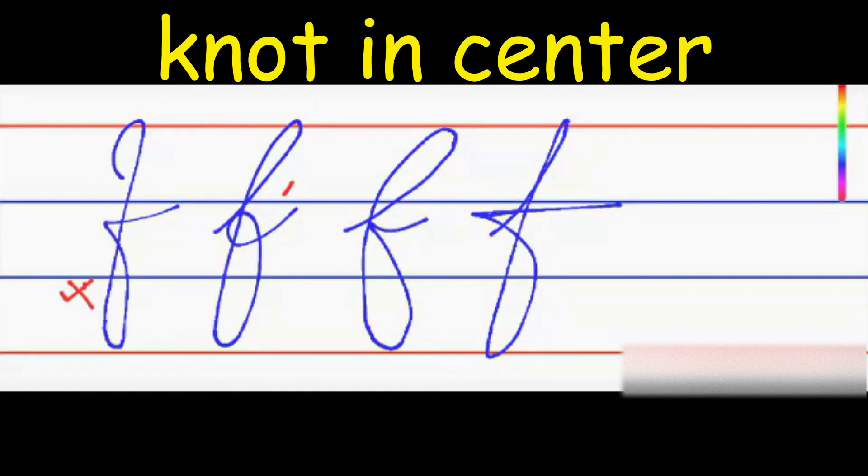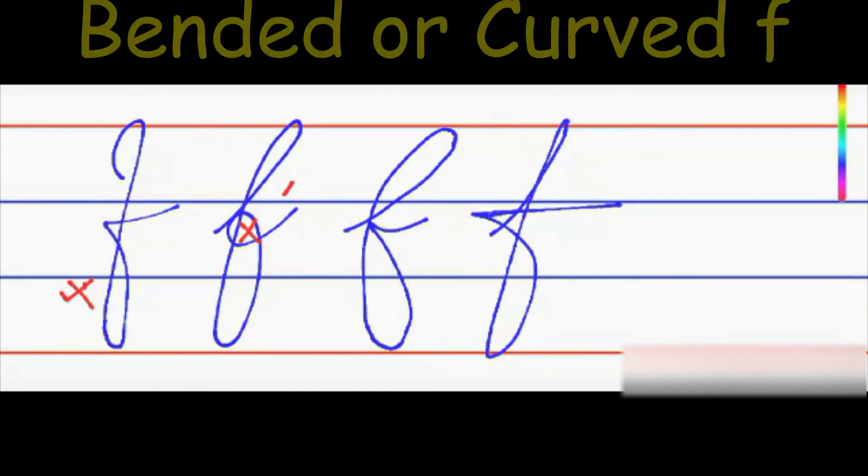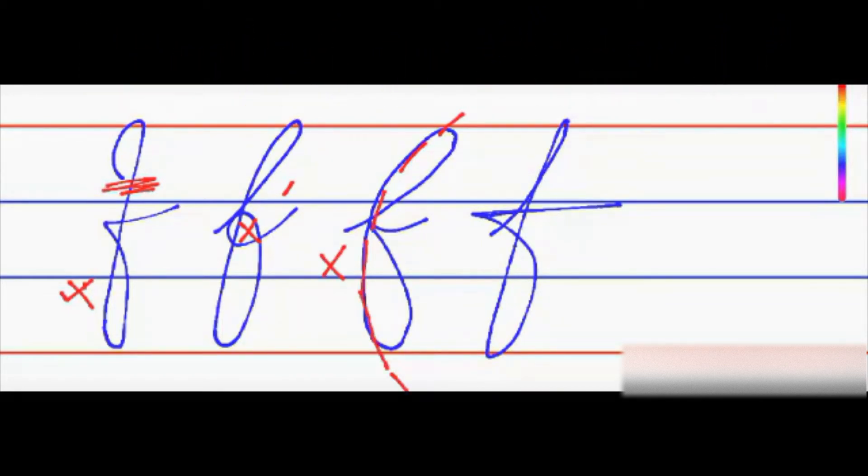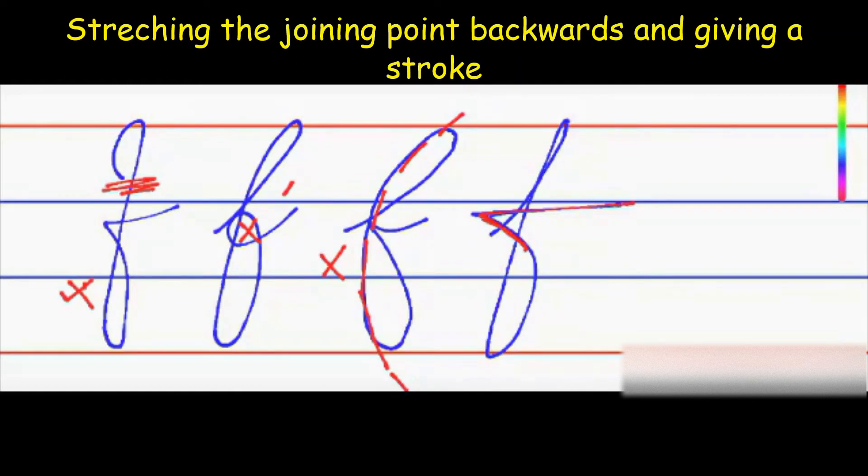This is actually not correct. Making a knot here is not correct. This is a different way of making loop. This line seems to be curved, so even this is not correct. Neither this way of stretching or giving a stroke outside is correct.